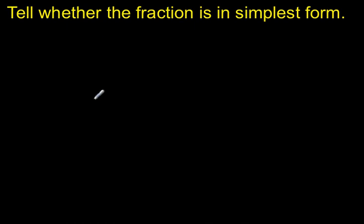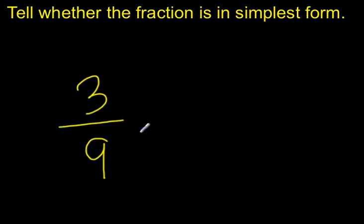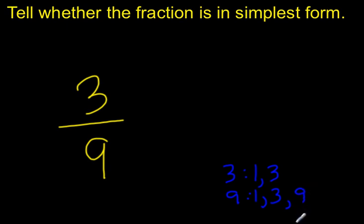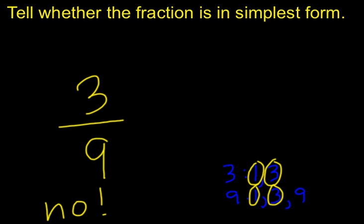Now let's look at how to tell if a fraction is already in simplest form. Let's try 3 ninths. The way to tell is to write the factors and see if 1 is the only common factor. Factors of 3: 1 and 3. Factors of 9: 1, 3, and 9. Is the only common factor 1? No — they also have a common factor of 3. So 3 ninths is not in simplest form. If I wanted to put it in simplest form, I could divide both by 3.